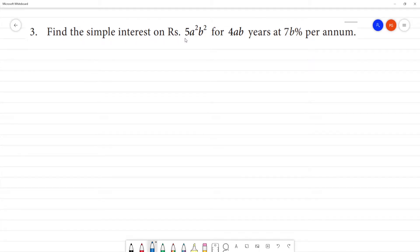Find the simple interest on Rs. 5a²b² for 4ab years at 7b% per annum. Now, we have the simple interest formula: SI equals PNR divided by 100.